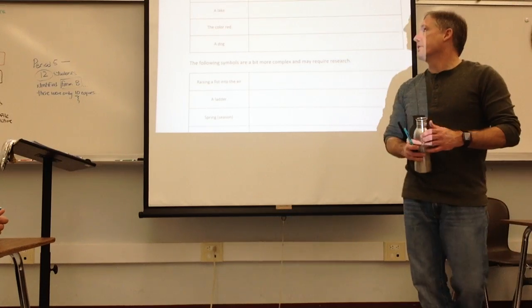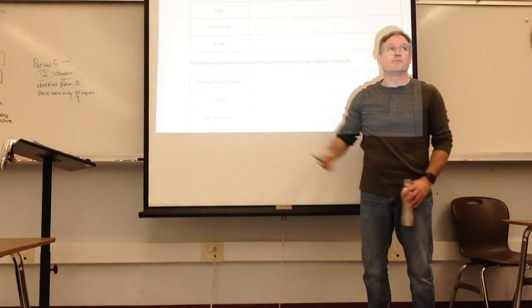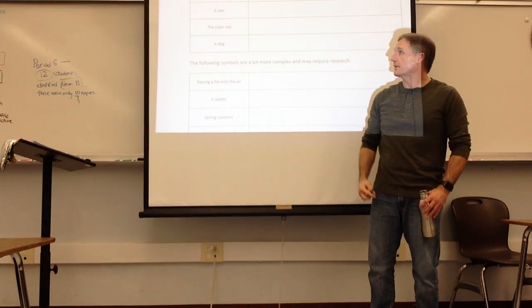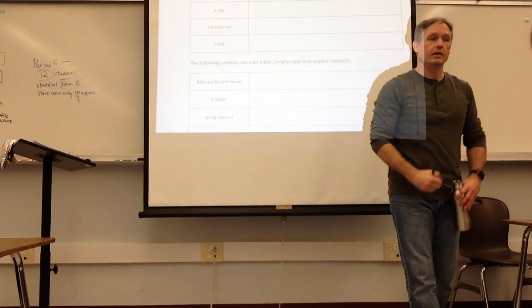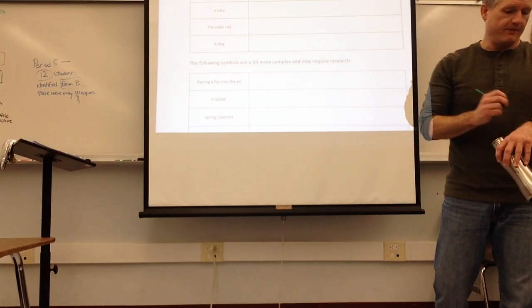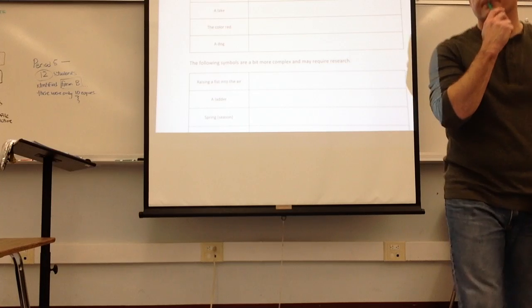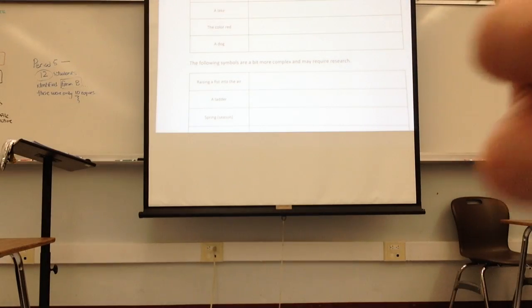So what you're going to do is go through and you're going to fill in these here. We have a serpent, a lake, the color red, the dog. I'll give you a minute or so to fill those in and explain what those things symbolize.